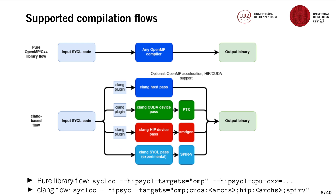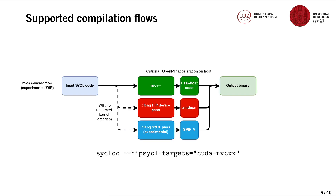The user does not really have to worry about many of these details, because the user can just invoke syclcc, and depending on which target is specified, the syclcc compilation driver will then automatically select an appropriate compilation flow. Recently, we have also added the NVC++-based flow, where HIP-SYCL can act as a library for NVIDIA's NVC++ compiler, which can then be used to target the host CPU as well as NVIDIA GPUs.